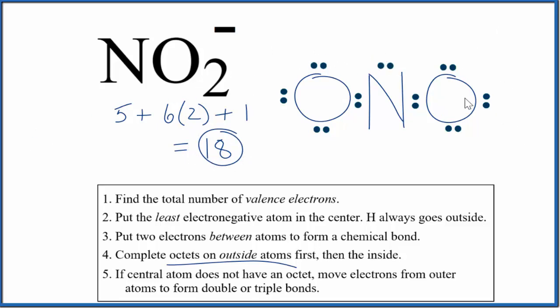But we've run out of valence electrons. Each oxygen, they have eight. But the nitrogen only has six. So here's what we can do. We can move two of these electrons here to form a double bond. So now, each oxygen still has eight, but the nitrogen has two, four, six, eight. It has an octet, and we've only used 18 valence electrons.